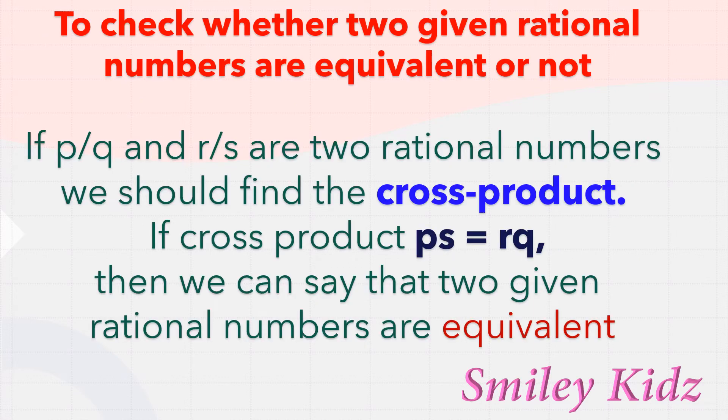Now let's check whether two given rational numbers are equivalent or not. If P/Q and R/S are two rational numbers, we should find the cross product. If the cross product satisfies P×S = R×Q, then we can say that the two rational numbers are equivalent.